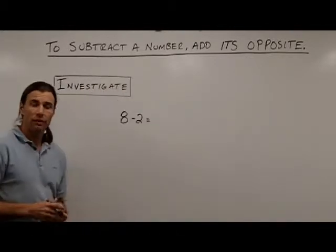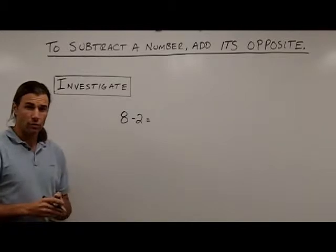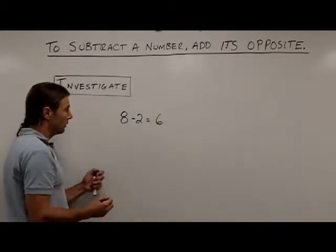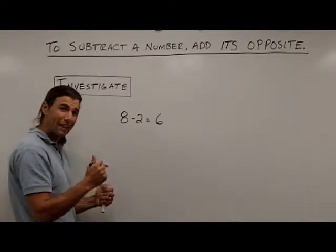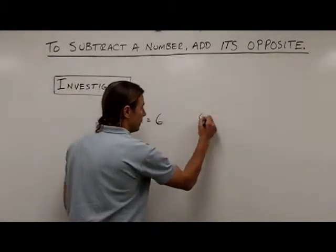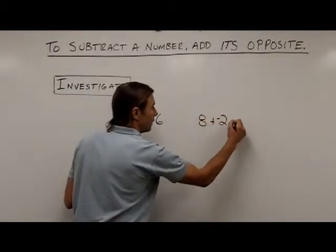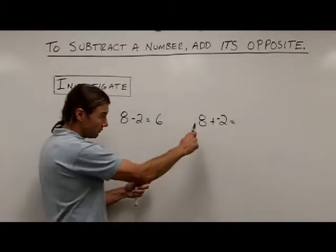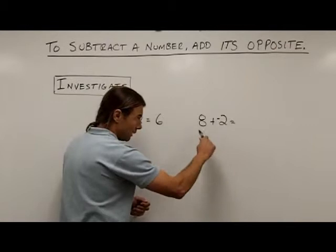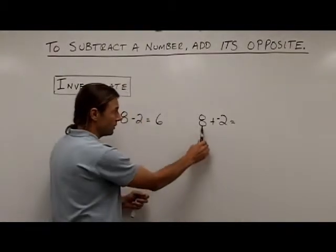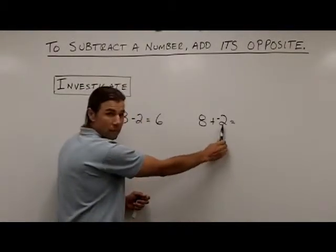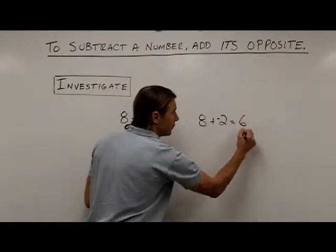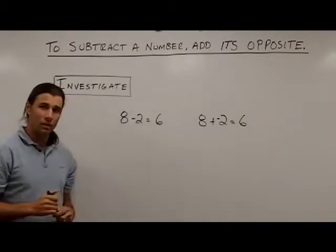Notice we get the same answer when we're subtracting 3 or adding 3's opposite. Let's take a look at another one: 8 minus 2. Again, another simple subtraction problem — 8 minus 2 gives us 6. Now instead of subtracting 2, let's add 2's opposite. I have 8 positives and 2 negatives. You can visualize the positives and negatives canceling out, and I have 6 more positives than negatives, so I'm going to have 6 positives left over. Again, I get the same answer.